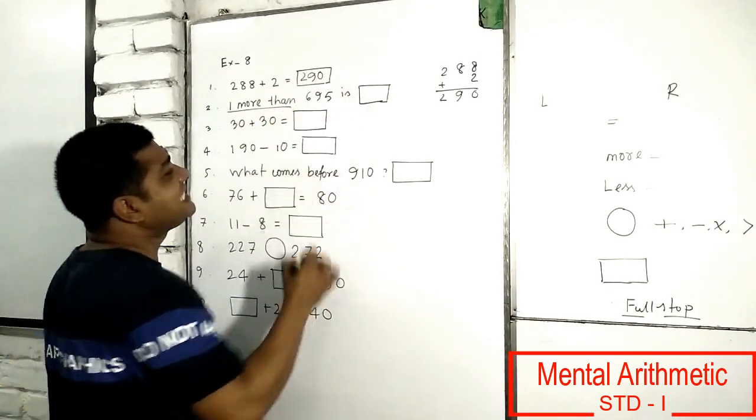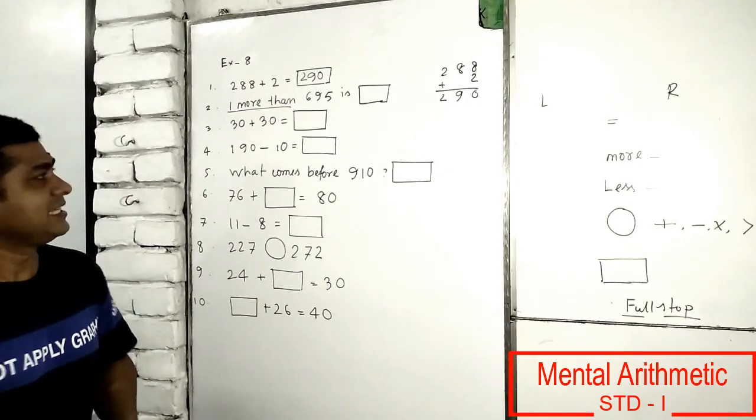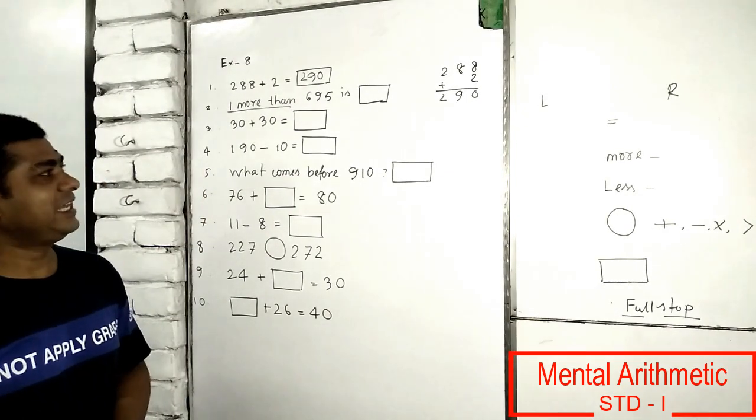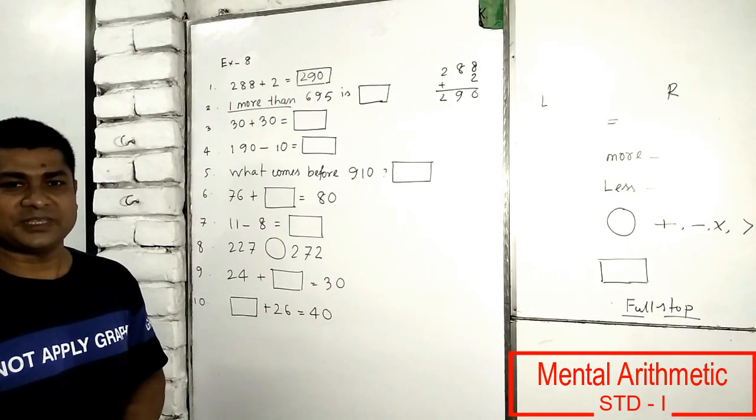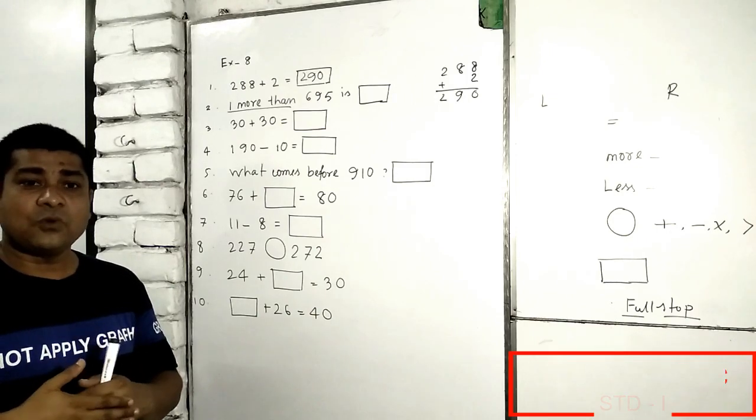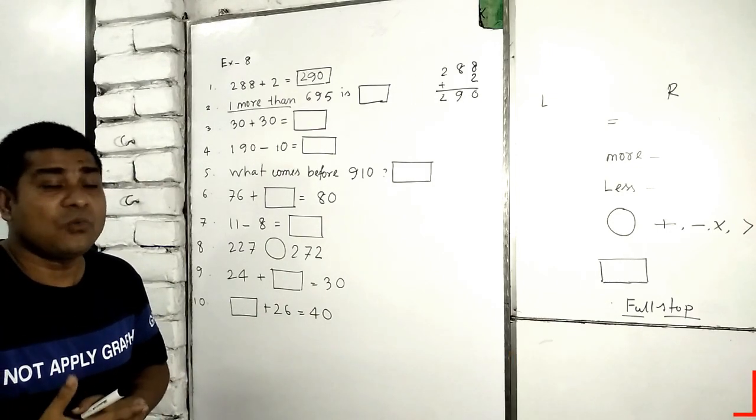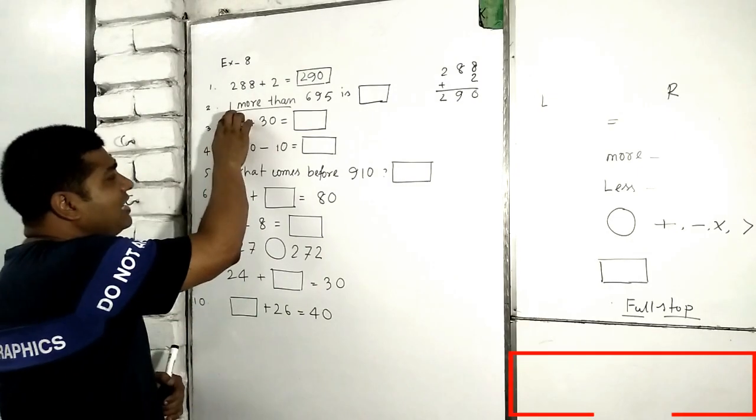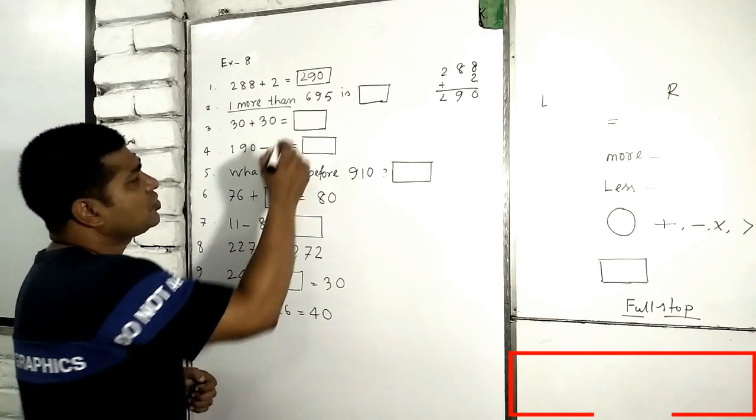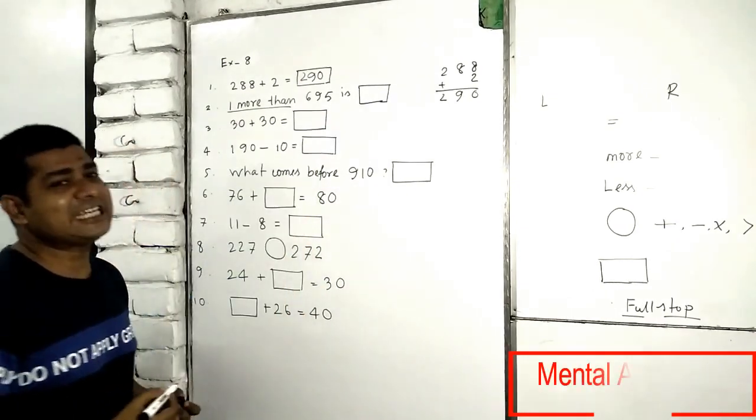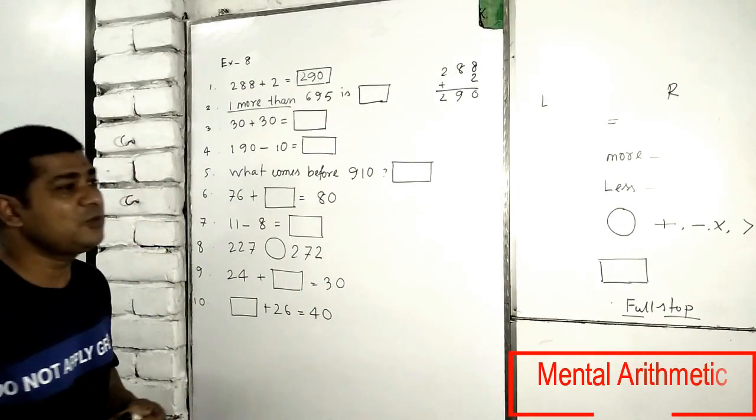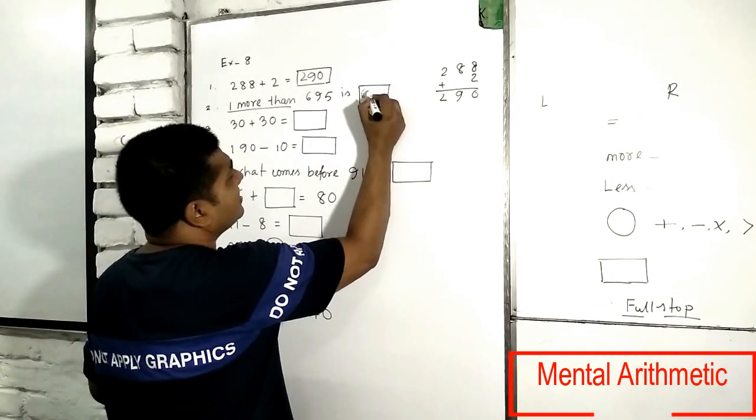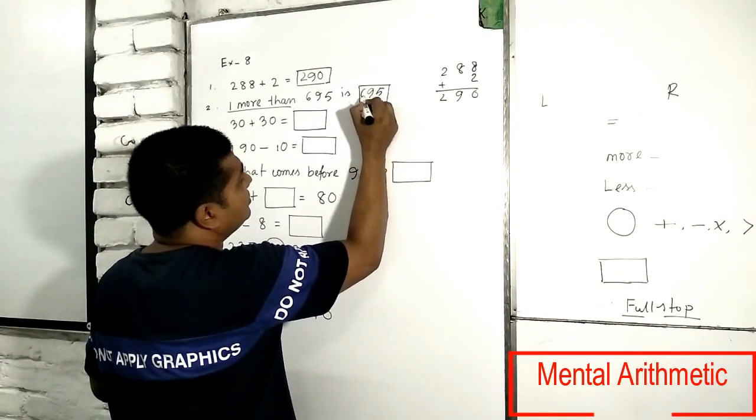Number 2: One more than 695. That means you have to increase more by one. How many you have to increase? Only one you have to increase. So if I increase 695 by only one, what will be? It will be the next number only. So it is very easy to you. Maximum math you can do it easily alone, but I am trying to help you understand something, little bit different things.